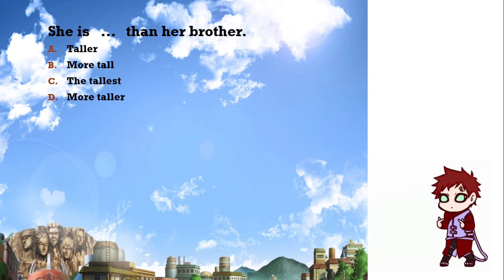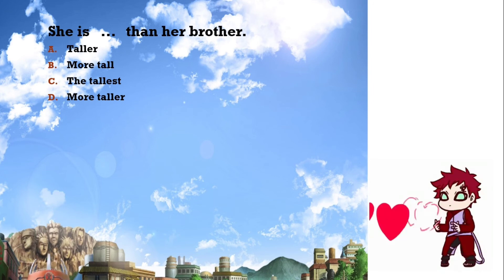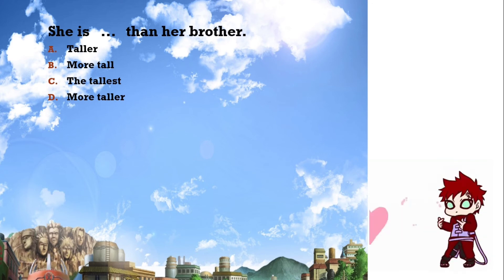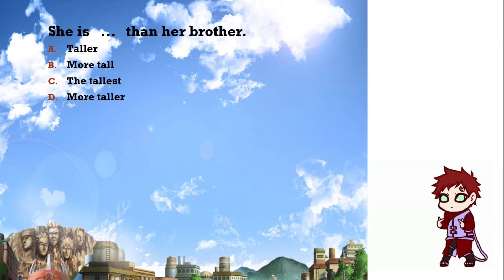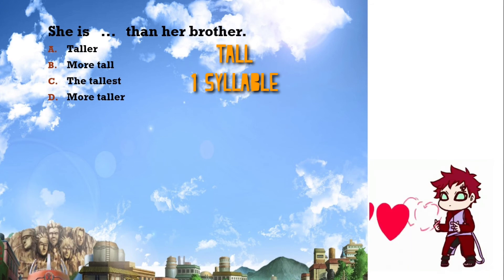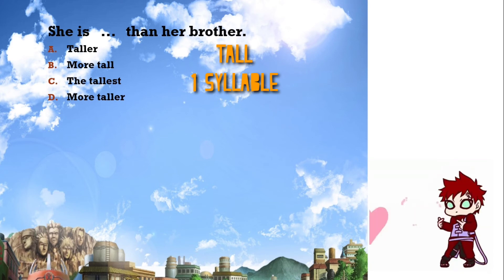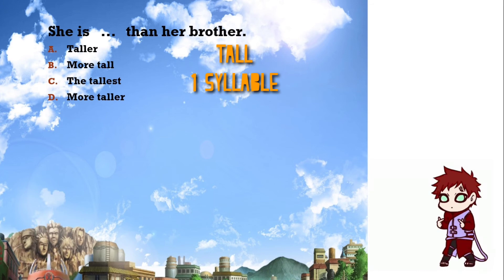Number seven: 'She is ___ than her brother.' We are comparing two people, so the sentence is comparative. The basic adjective is 'tall,' which has one syllable. For one-syllable adjectives we add -er for comparative. The answer is 'taller.'